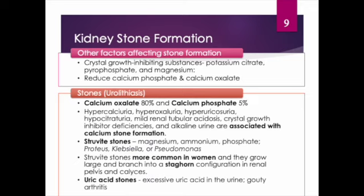Struvite stones are made up of magnesium, ammonium, and phosphate, and can be caused by Proteus, Klebsiella, or Pseudomonas — so there can be a co-infection of both kidney stones and a urinary tract infection. Struvite stones make up about 5 to 10% of all kidney stones, tend to affect women more often than men, and grow large branches called staghorn configurations that lodge into the renal pelvis and calyces. Non-staghorn calculi can be of all different sizes and may be located in the calyces, renal pelvis, or various sites along the ureter.